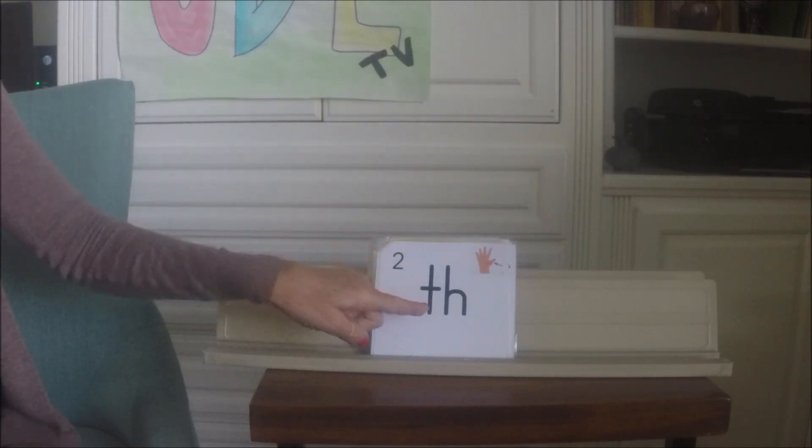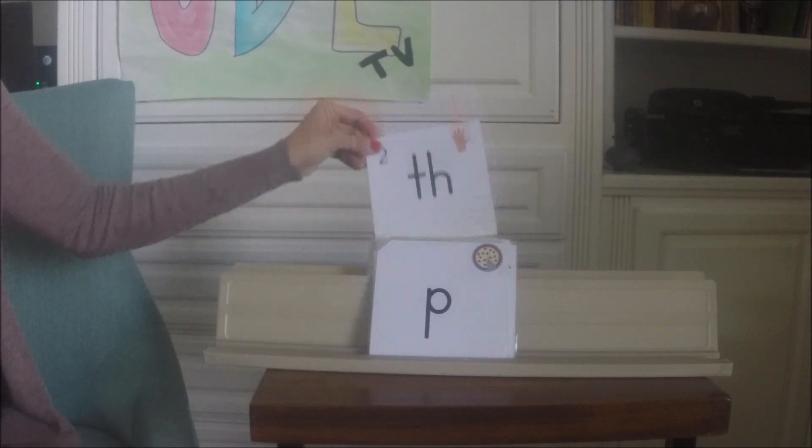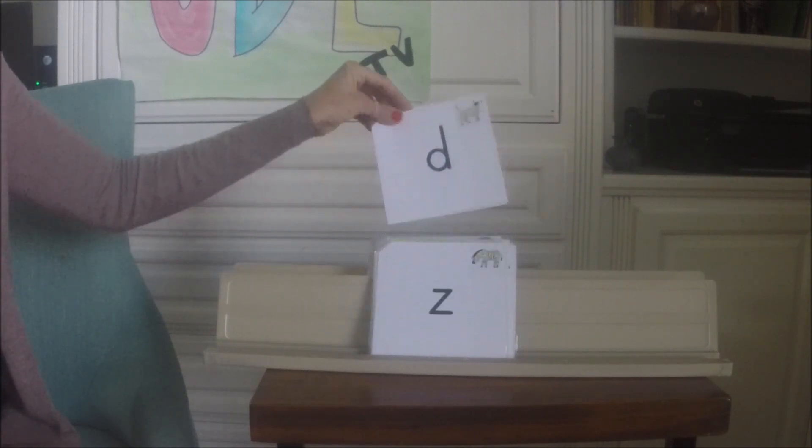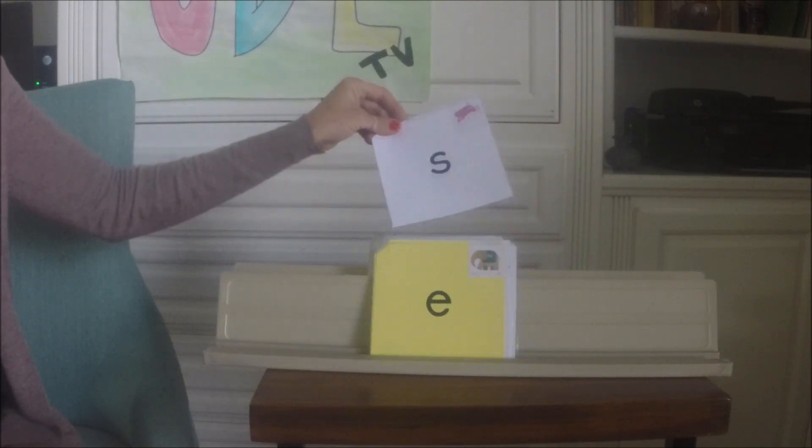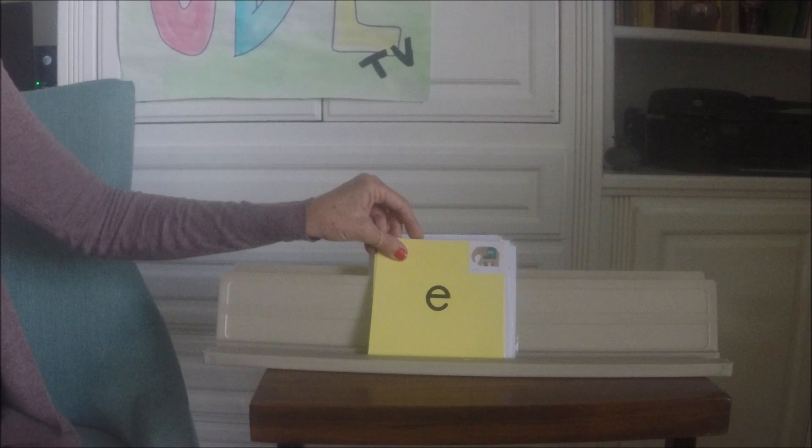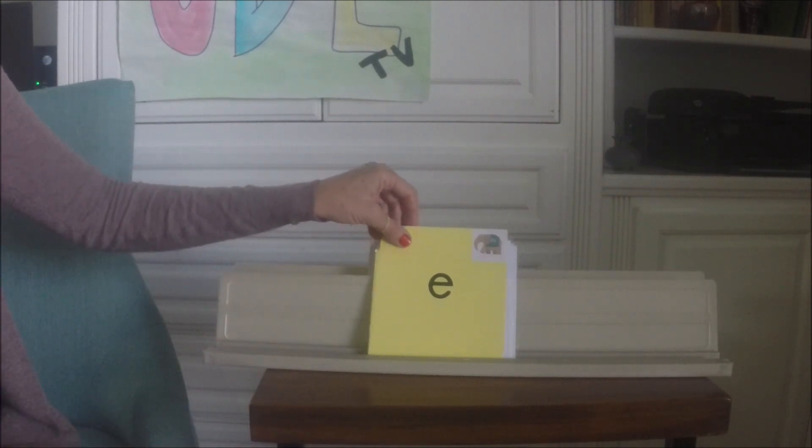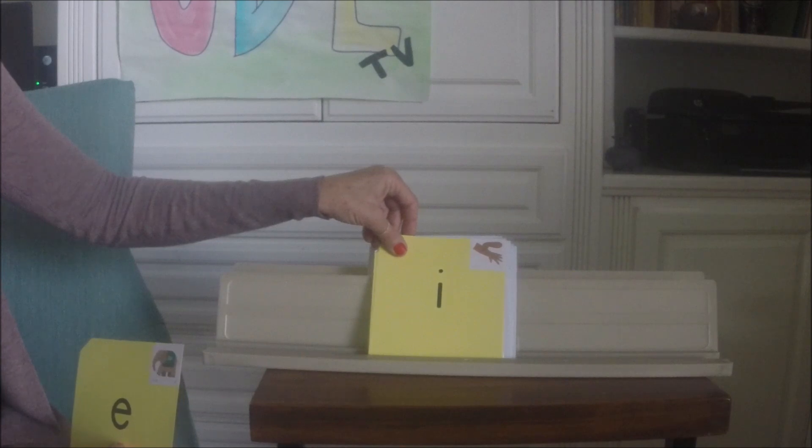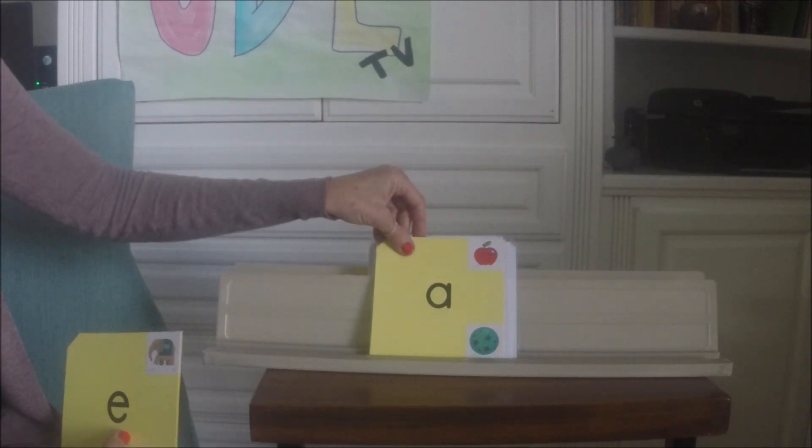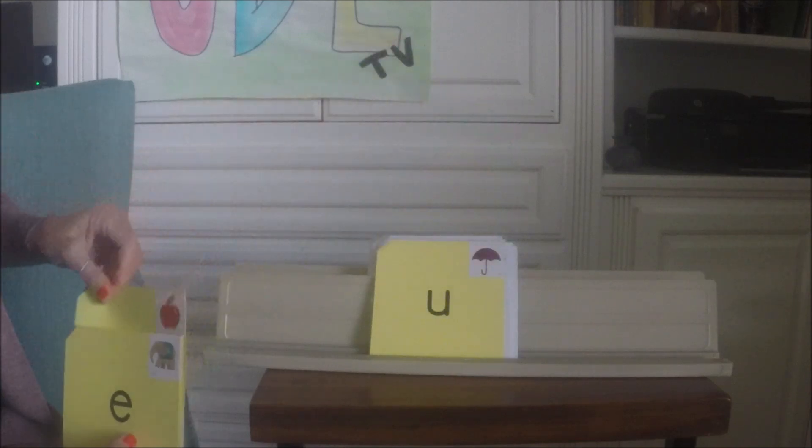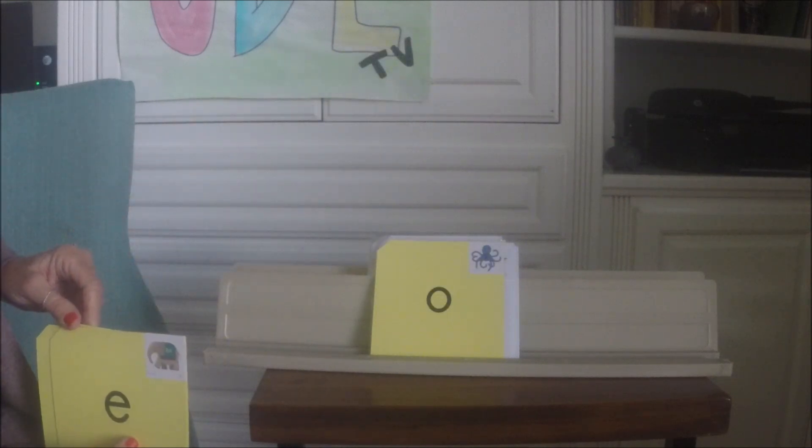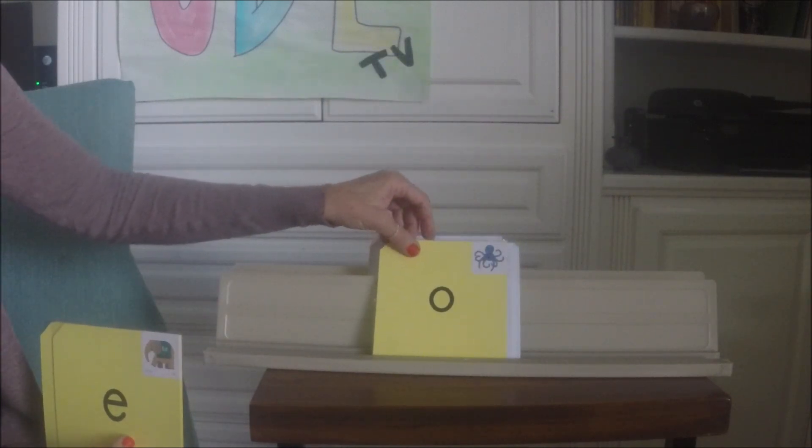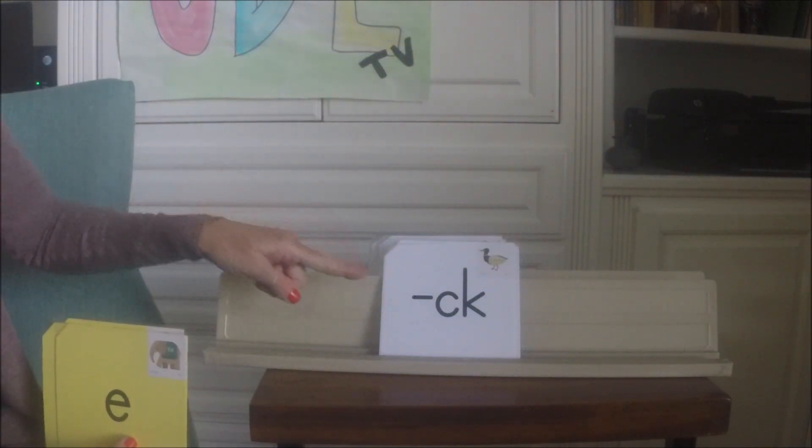Two sounds for mmm. Ee has two sounds: ee, ee, ii, two sounds. Two sounds. Two sounds. One sound, k.